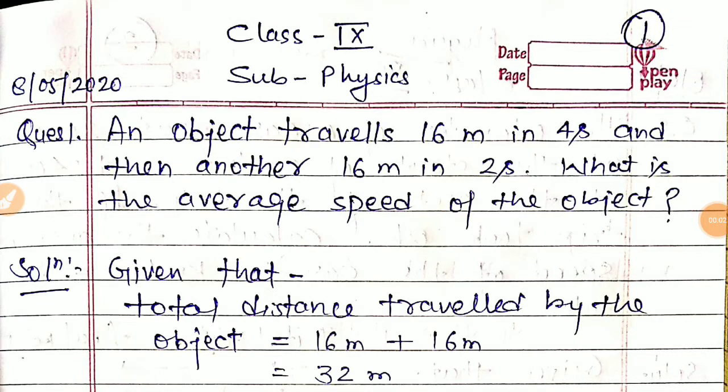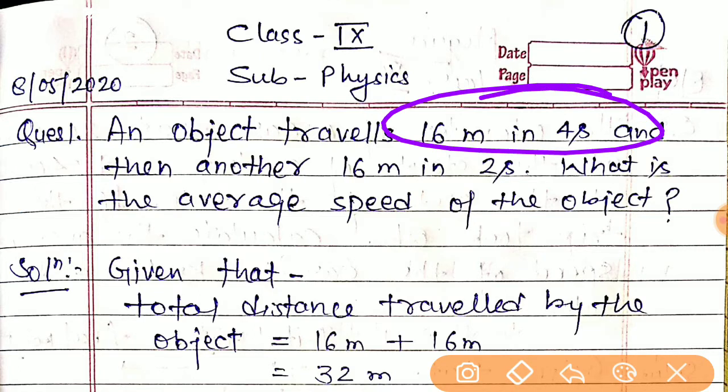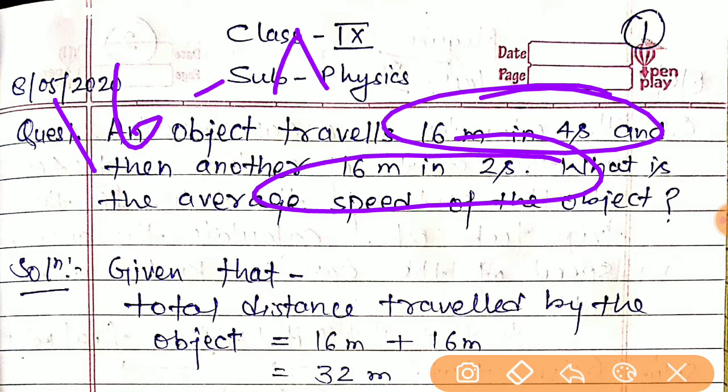Good morning students, this is your physics teacher and I will teach you about numerical problems related to average speed. Let us see the first numerical: An object travels 16 meters in 4 seconds, and another 16 meters in 2 seconds.